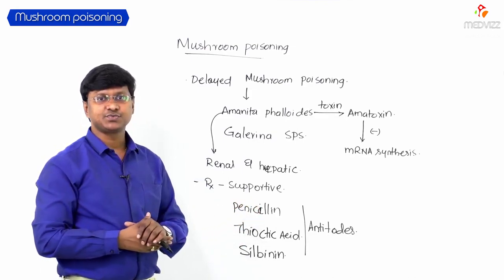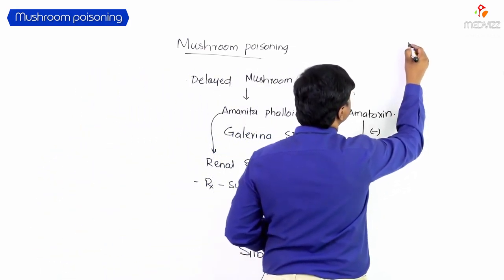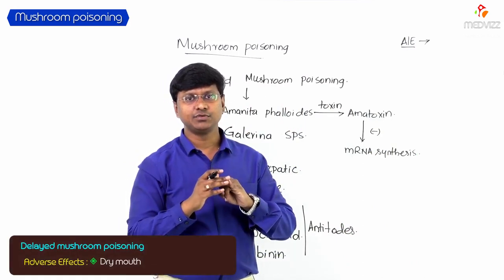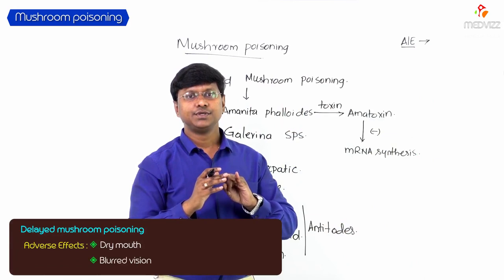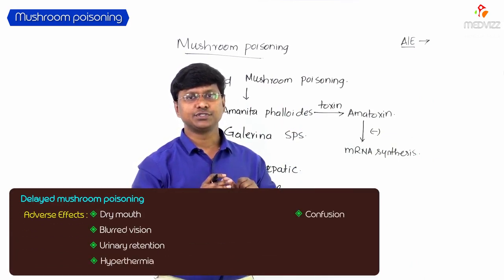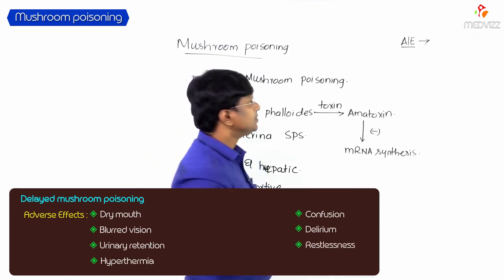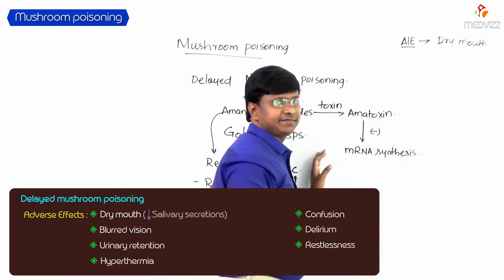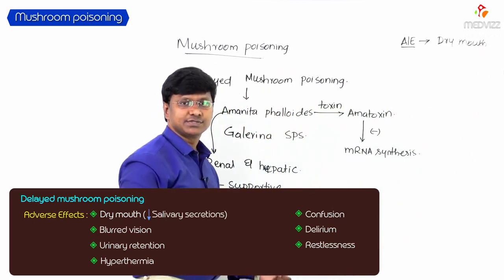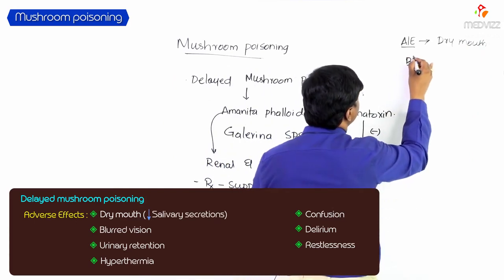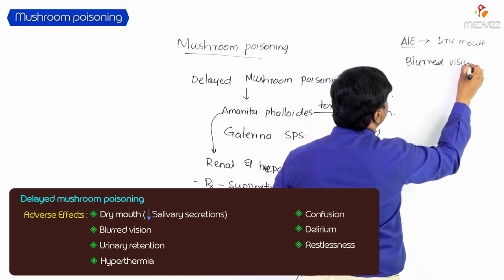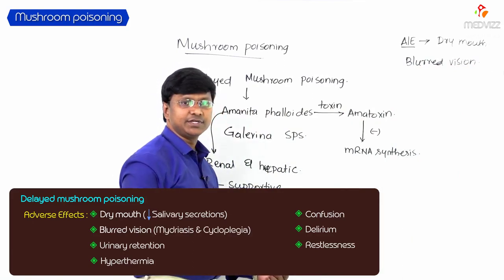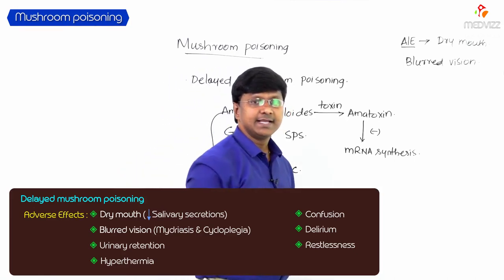Regarding adverse effects associated with these drugs: they include dry mouth due to reduced salivary secretions, blurred vision due to mydriasis and cycloplegia — the anticholinergic drugs cause pupil dilatation and loss of accommodation — leading to blurred vision.